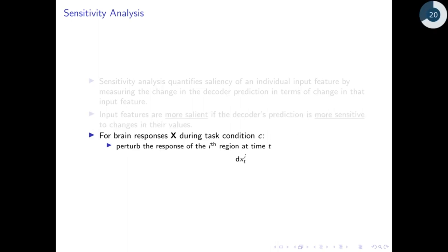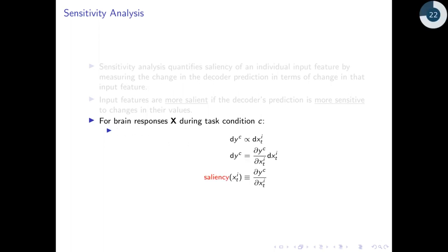Let's see this mathematically. Let's say we have brain responses x during task condition c. If we perturb the response of the ith region at time t, it causes a proportional perturbation in the class score yc. Therefore, the proportionality constant is the derivative of the class score with respect to the feature value, which we define as the saliency of that input feature.